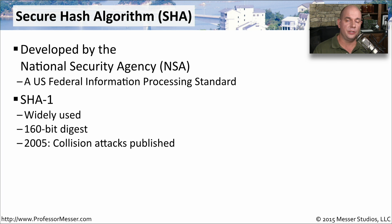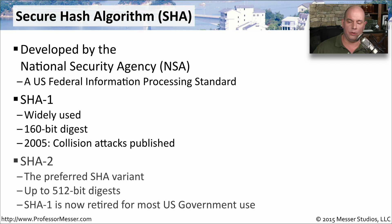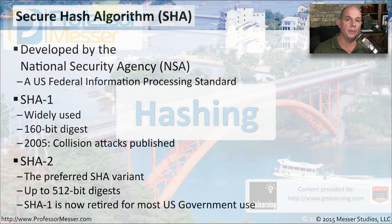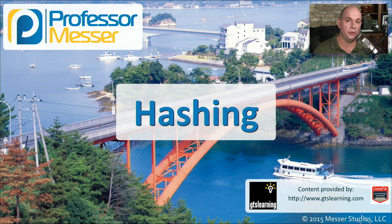One of the original SHA standards is SHA-1. It was a 160-bit digest and was widely used in the US government. But in 2005, a number of collision attacks were found, and a new version called SHA-2 was created. Today, SHA-2 is the preferred version — it's a 512-bit digest. Most people are no longer using SHA-1, and if they are using a secure hash algorithm, they're opting to use SHA-2.